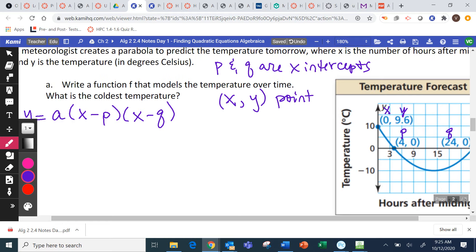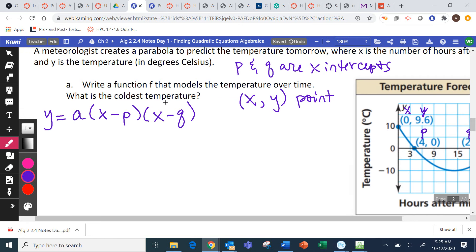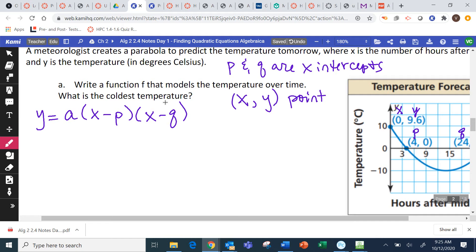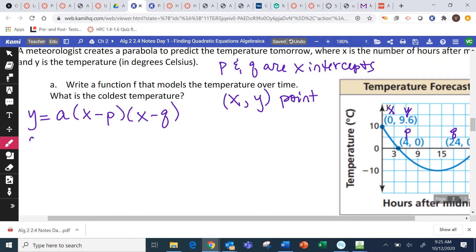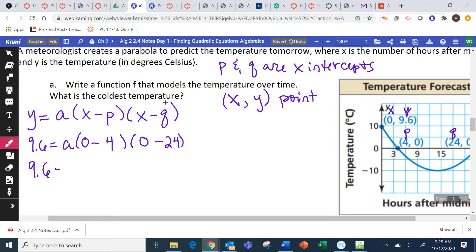We're going to plug it all in. So, my Y value is first. And Y is 9.6. Equals, I'm going to solve for A. X is 0, minus P is 4. X is 0, minus Q is 24. Questions about plugging that stuff in. So, the next thing you have to do is you have to solve for A.